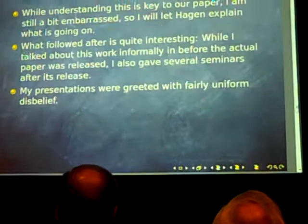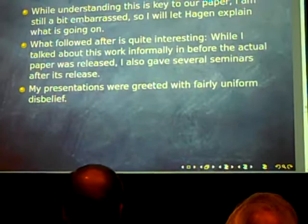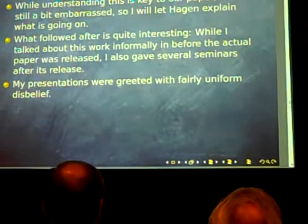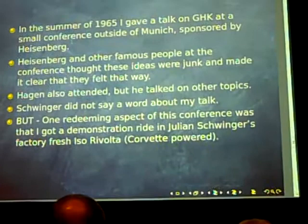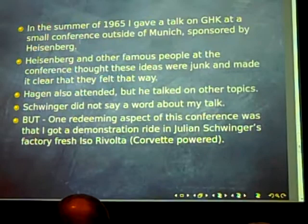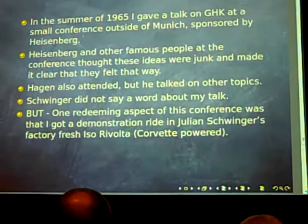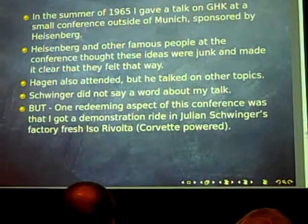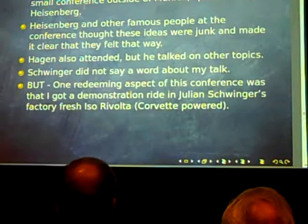I'm embarrassed about it. We're letting Hagen do the heavy lifting to talk about the equations. But I'll just say a little bit: after all of this, I gave some presentations, and they were received with great skepticism. I went to a conference along with Dick that Heisenberg had organized outside of Munich. I talked on this and was really beat up. Heisenberg — who obviously was an incredibly smart man that should have known better — told me what a bad physicist I was. He might have been right about the bad physicist, but the model was really right. One nice thing about this conference: Julian Schwinger, who was there, didn't say a damn thing about the physics, but he said, 'I've got a nice new car with my Nobel Prize money,' and he took me for a ride.